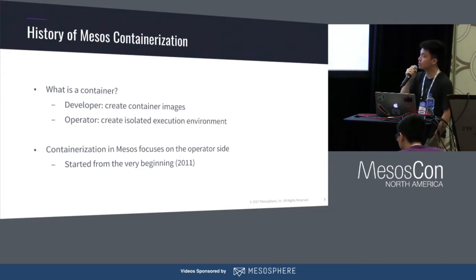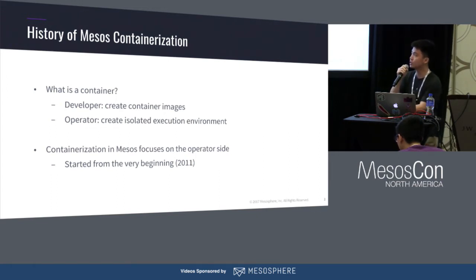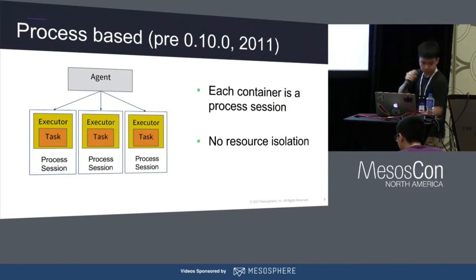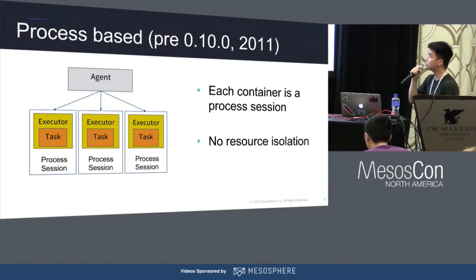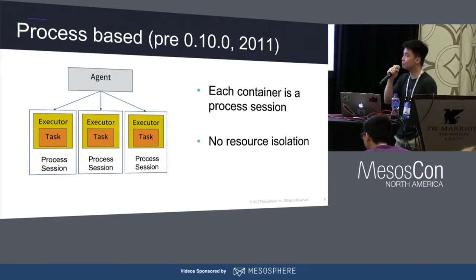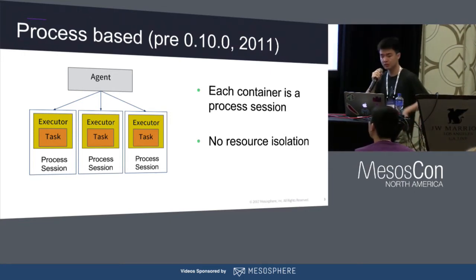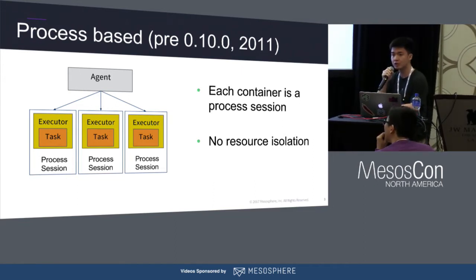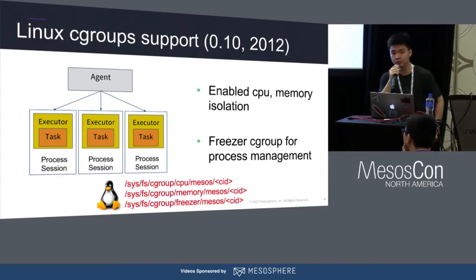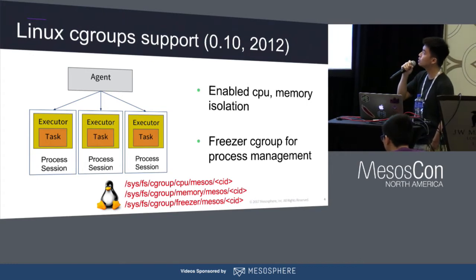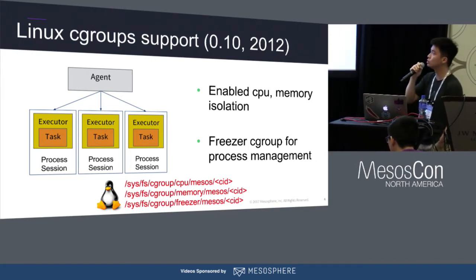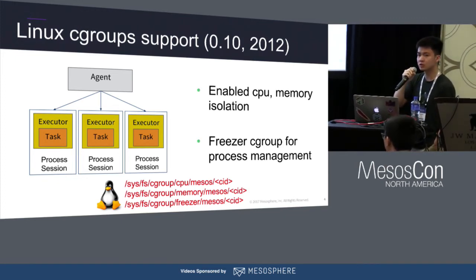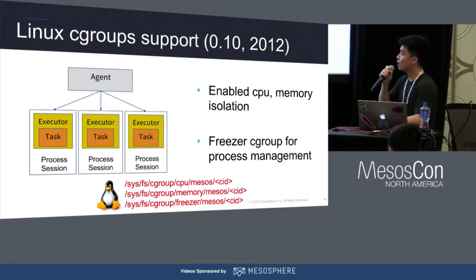For the containerization of Mesos, it has been there for years since 2011. In 2011, we didn't have a containerizer yet. Each container was a process of Mesos, and inside that process we had the executor which launched the task. There was no resource isolation at that time. In 2012, we evolved containerization in Mesos, introducing CPU and memory isolation to the process using cgroups.